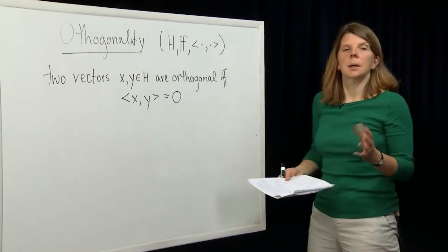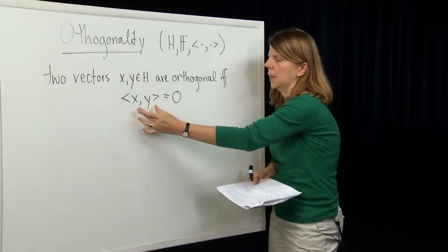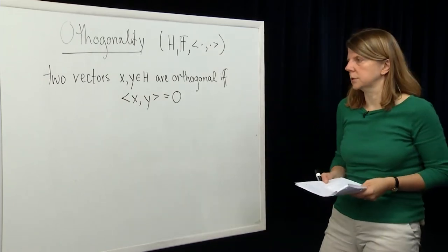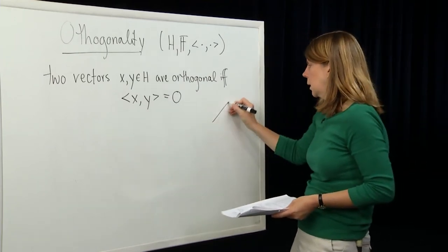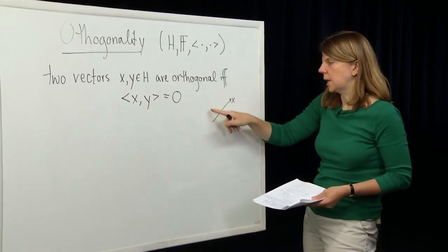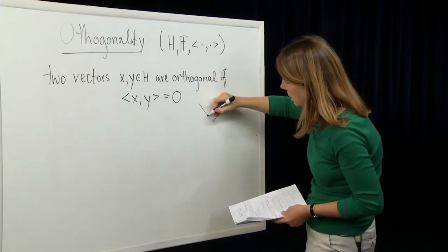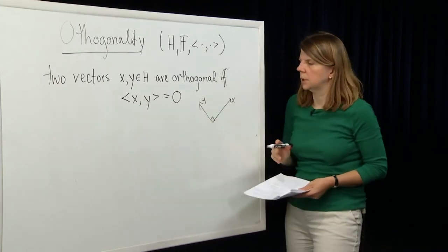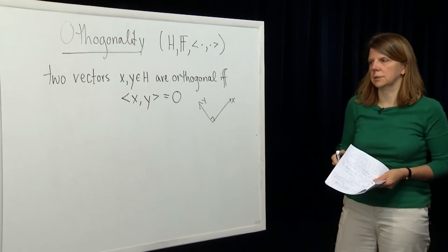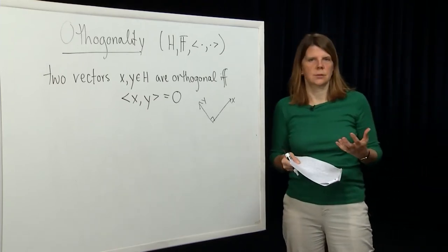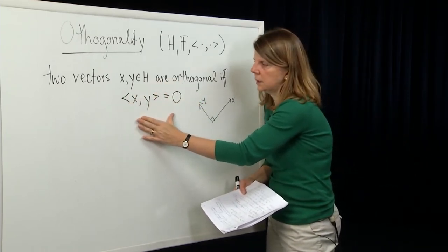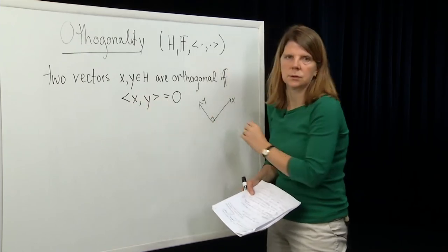We talked last module about some examples. In R^n or C^n, the standard inner product is simply the dot product between those vectors. So in R^2, if we have a vector x, then y is orthogonal to x if its inner product with x is 0 — meaning y is perpendicular to x. We're generalizing to vector spaces which are not necessarily R^n or C^n, for example function spaces, so we generally define orthogonality as the inner product between those vectors being equal to 0.